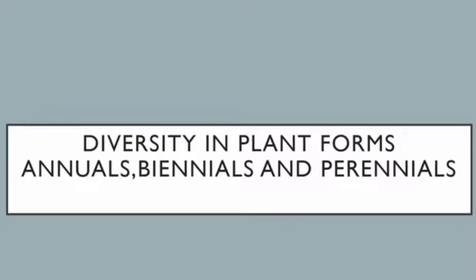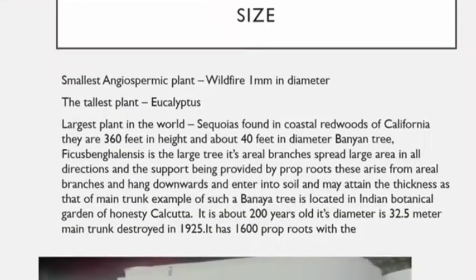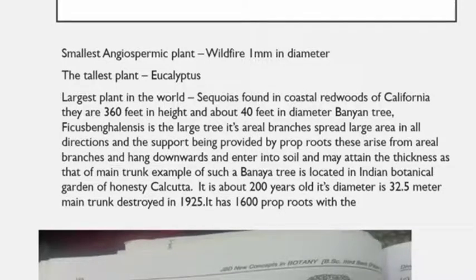Angiospermic plants may be as small as a pinhead size or as tall as a eucalyptus tree. The smallest angiospermic plant is Wolffia, having a diameter of 1 mm, found free-floating in aquatic habitats such as ponds. It consists of a small green stem with a few small roots. The tallest plant among angiosperms is eucalyptus, about 100 meters or more in height. The largest plant in the world is Sequoia sempervirens, found in the coastal redwoods of California.